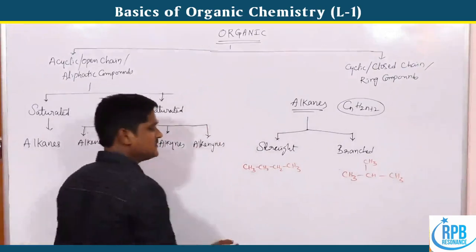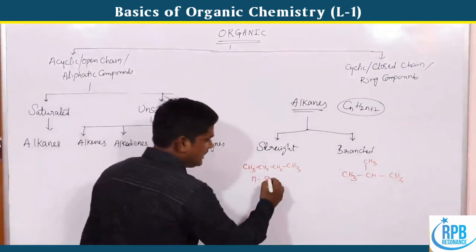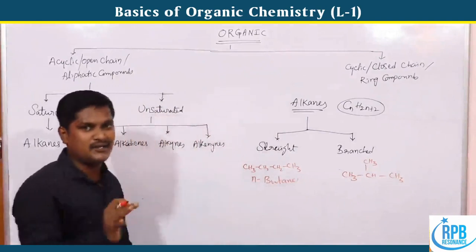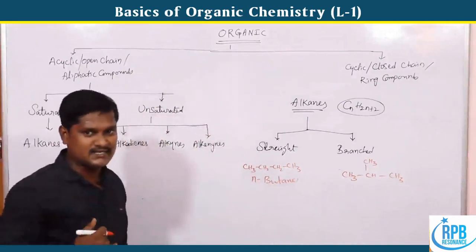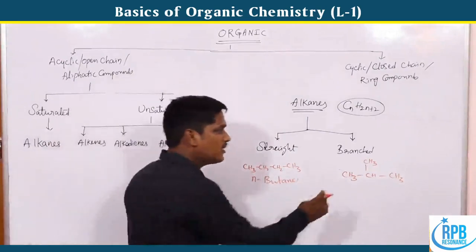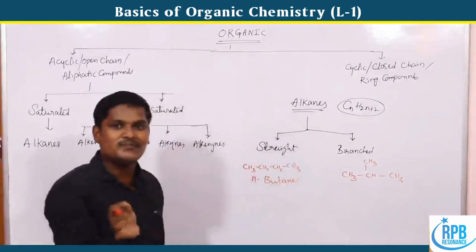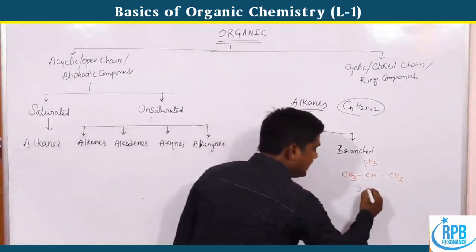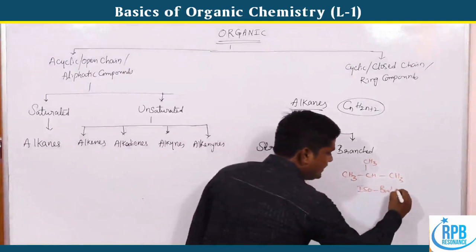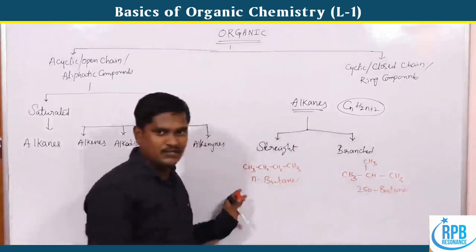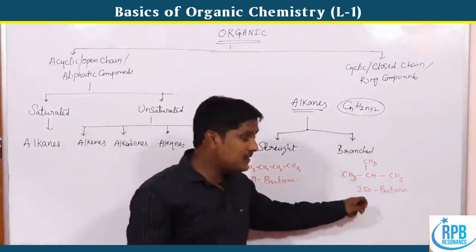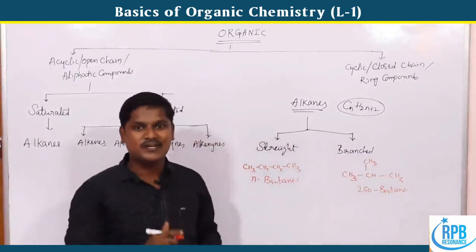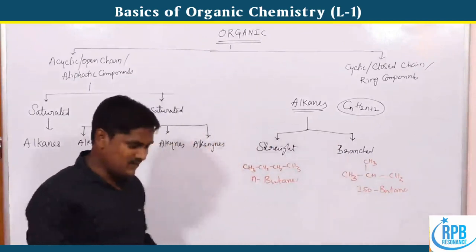IUPAC names are used to name these compounds. For straight chain compounds, we use the prefix N — which stands for Normal. So a straight chain four-carbon compound is called N-butane.